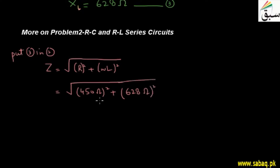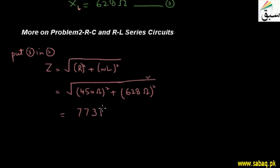When I calculate it, the value that comes out is 773. As you can see, the units are ohms squared, and the square root cancels the square, so we have only ohms. This is the impedance value, and we call this equation number 4.